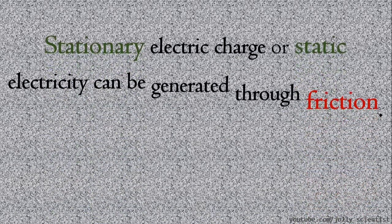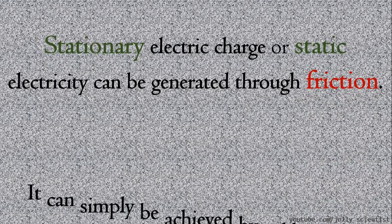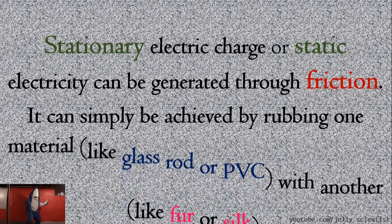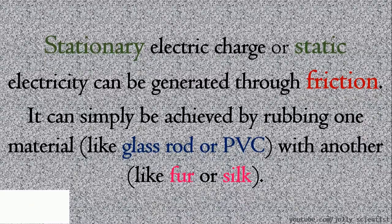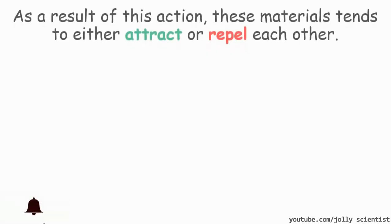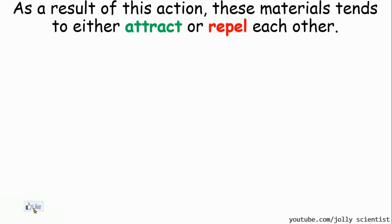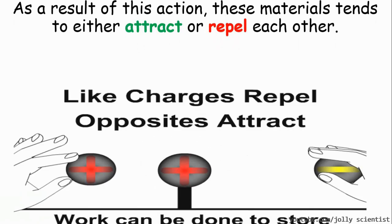Stationary electric charge or static electricity can be generated through friction. It can simply be achieved by rubbing one material like glass rod or PVC with another material like foil or silk. As a result of this action, these materials tend to either attract or repel each other.